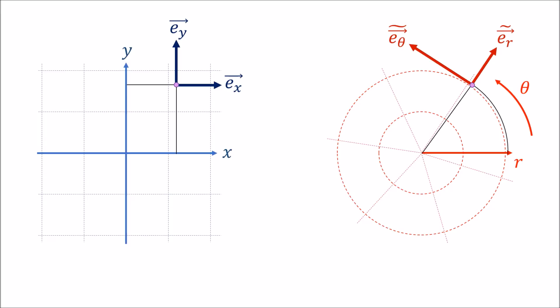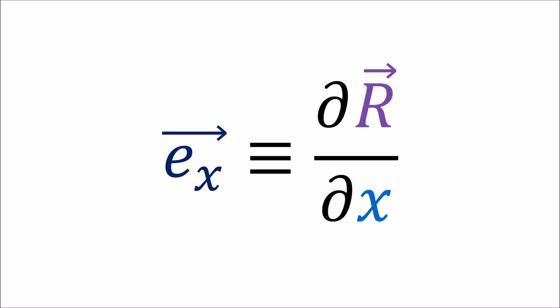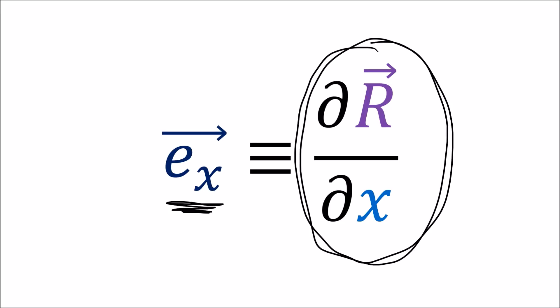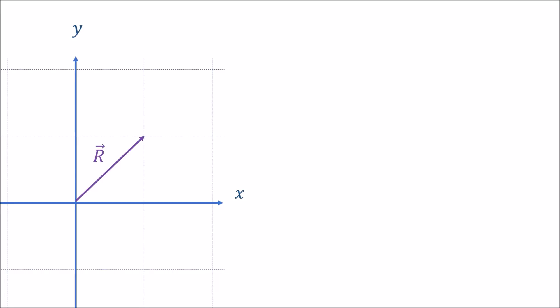In the introduction video of this series, I told you that a vector symbol can be reinterpreted in tensor calculus as a partial derivative. Let's start with a position vector capital R in Cartesian coordinates with its tip at coordinates x, y — a position vector which starts at the origin and ends at the point x, y.